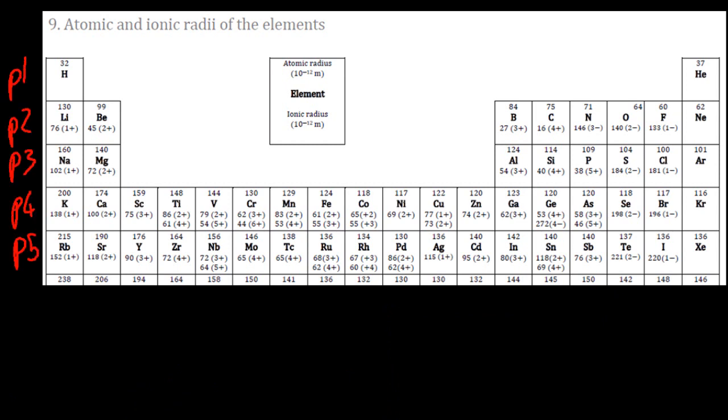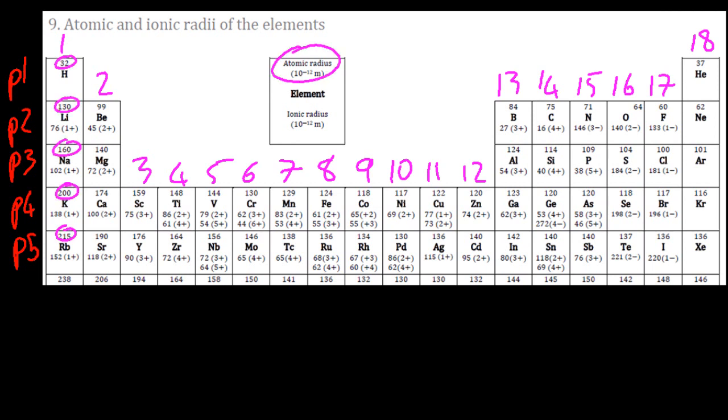So two trends to remember then. As you go across a period the atoms get smaller, and as you go down a group you can see that the atoms or the atomic radii get bigger.